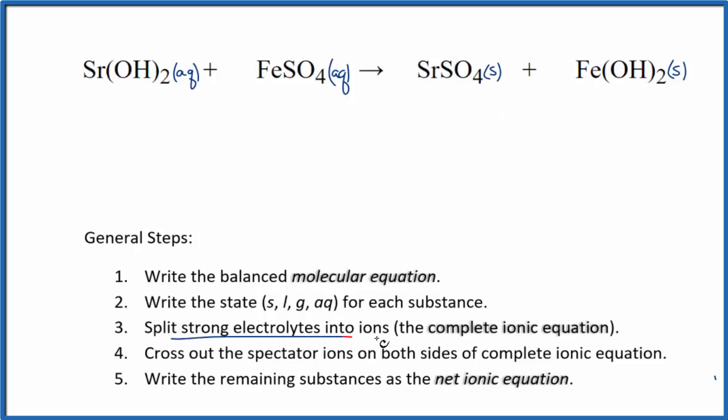Now we can split the strong electrolytes into ions for the complete ionic equation. Strontium's in group 2 on the periodic table. It'll have an ionic charge of 2+. Then the hydroxide, the whole thing is always 1-. So we have our strontium ion, that Sr²⁺. Then we have two of these hydroxide ions, OH⁻.